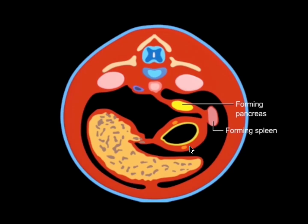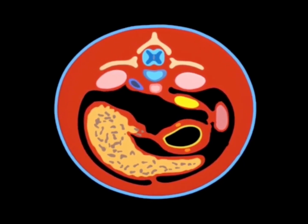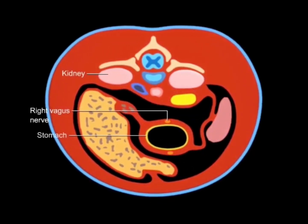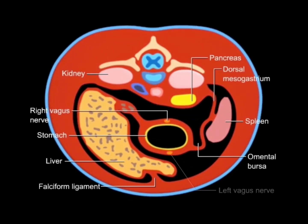The pancreas and the spleen, since they form within the dorsal mesogastrium, will also be pushed to the left. Lastly, a branch from the celiac trunk also gets a ride to the left, and while in transit it forms many different branches that will supply different parts of the foregut.